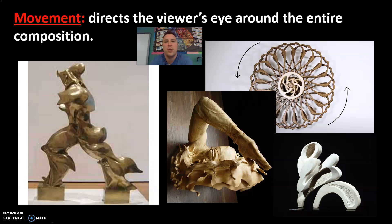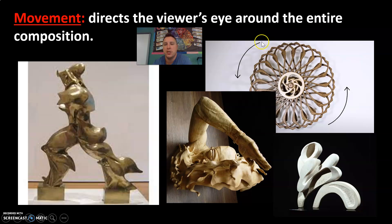And lastly is movement. We talked about movement in the figure drawing project, where we talked about physical movement or something physically moving. But in this case, we're using the second half of the definition, which has to do with directing the viewer's eye around the entire composition. Here you can see these arrows going in a counterclockwise direction, and how this abstract sculpture creates that sense of movement and motion that directs your eye around the entire thing.